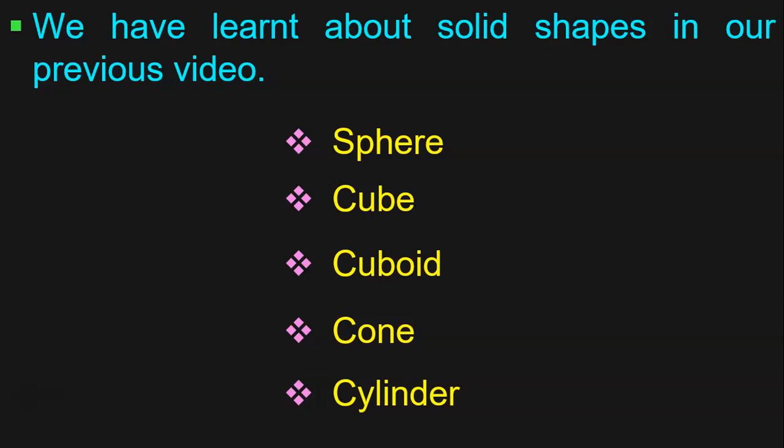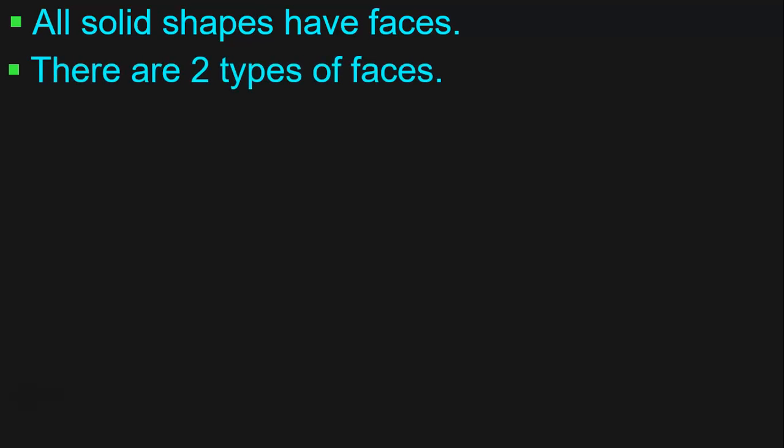The link to this video is given below in the description box and also in the i-card section. Now, in this video, we are going to see the two different faces that different solid shapes have. All solid shapes have faces. There are two types of faces. What are they? Flat face and curved face.